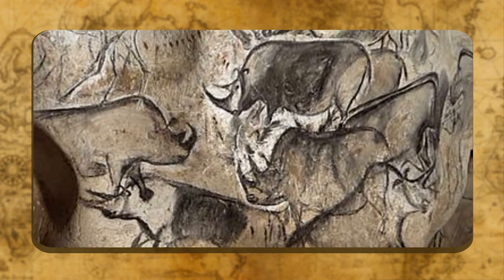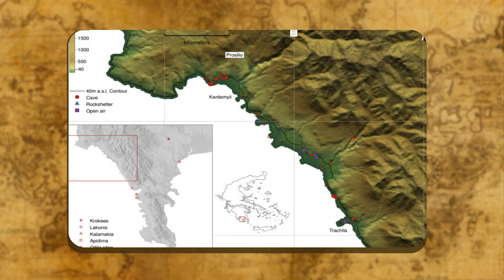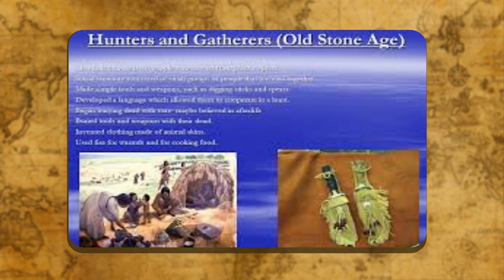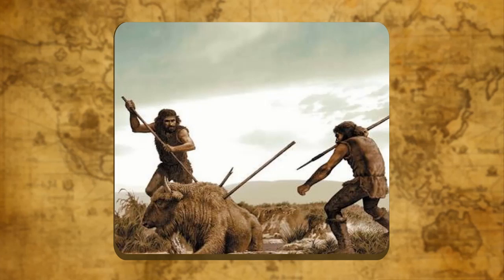Paleolithic Age. Paleolithic is a Greek word formed of two Greek words: Paleos, which means old, and Lithos, which means stone. Hence, this age is also called the Old Stone Age. In this age, man used stone to make crude tools and weapons. His life was only a little better than that of the animals in the jungle.